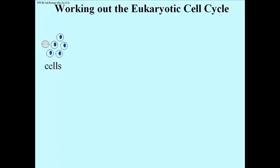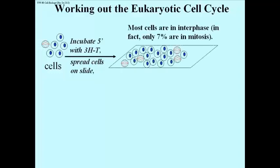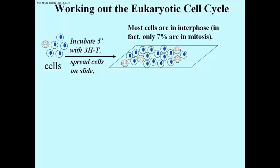Let's continue to work out the cell cycle in an experimental way. Here we have some cells in culture. We imagine that some are in mitosis — that's the one with the little red cartoon of a spindle fiber — and other cells are not. If you take such cells at any time from a non-synchronous culture and incubate them for a short time with a precursor to DNA, in this case tritiated thymidine. Remember, thymidine is part of the nucleotide that is incorporated into DNA exclusively.